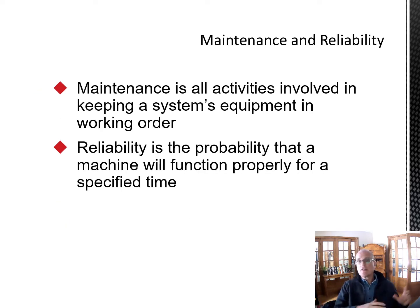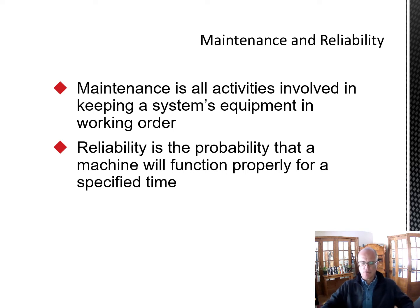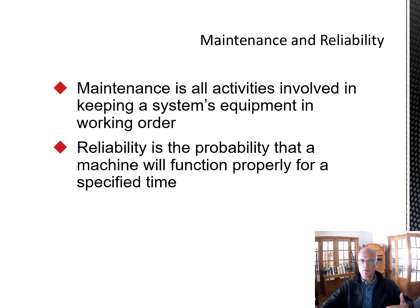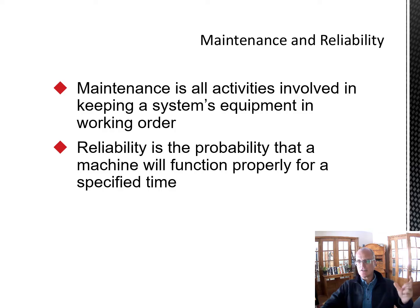Maintenance is really all the activities involved in keeping a system's equipment in working order. Sometimes you'll shut down and do regular maintenance — just upkeep — but it can also be training and other things to make sure people are using equipment correctly and keeping it running. Reliability, as I said, is the probability that a machine will function properly for a specified amount of time, and maintenance is the activities involved in reducing the risk of that failure.